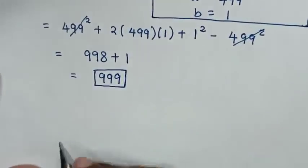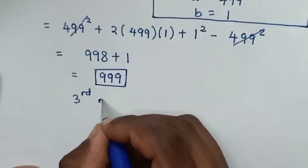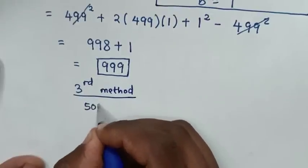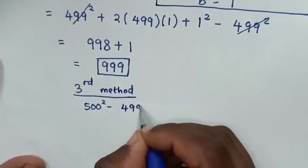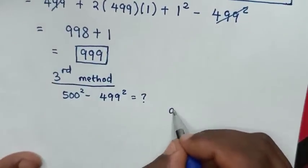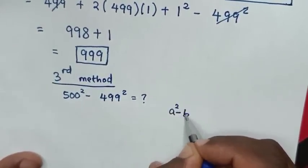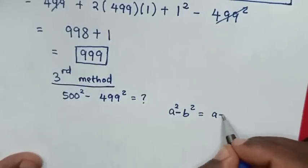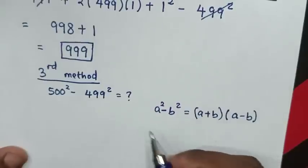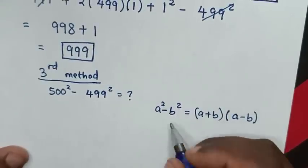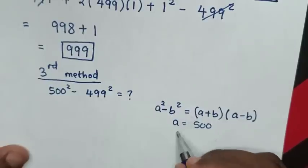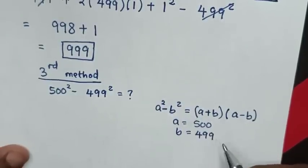Now to try another method, which is the third method. From our problem, which is 500 square minus 499 square — this expression is in the form of A square minus B square, which is equal to A plus B bracket times A minus B. Comparing A square with 500 square gives A equal to 500, and comparing B square with 499 square gives B equal to 499.